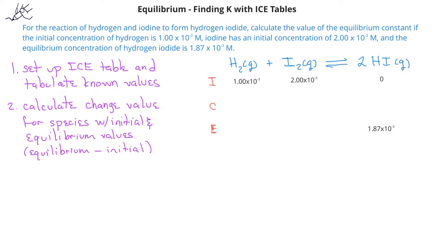That allows us to calculate the change in concentration of hydrogen iodide. Since it started at zero and increased to 1.87 × 10⁻³, the change for hydrogen iodide must be +1.87 × 10⁻³ M.